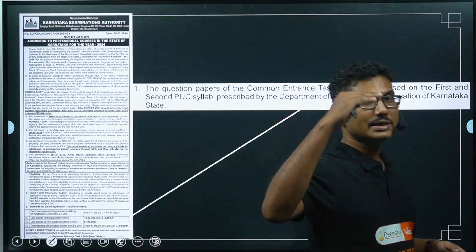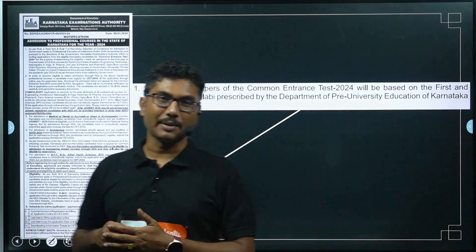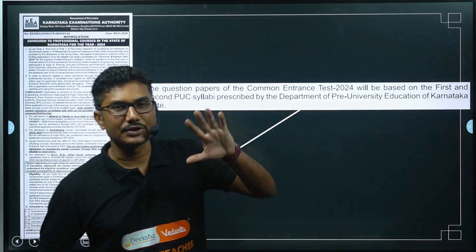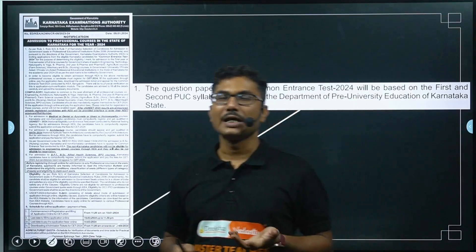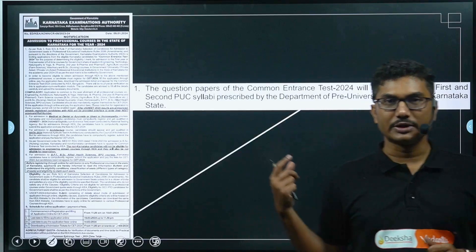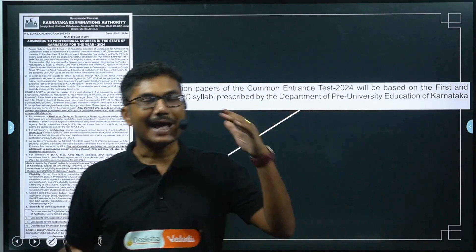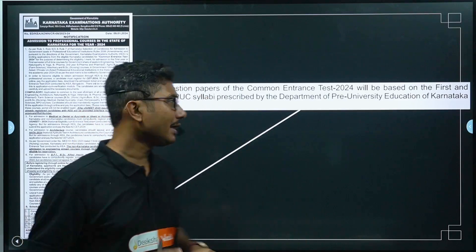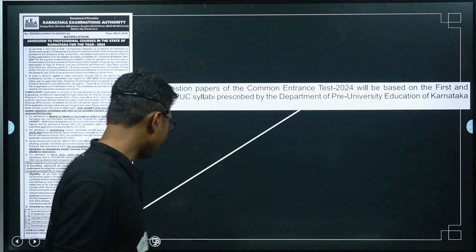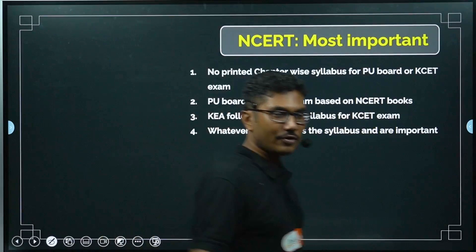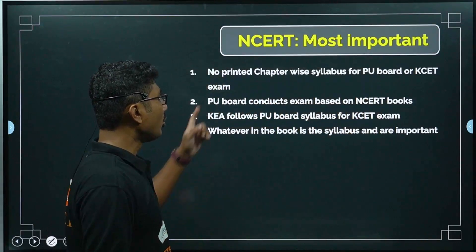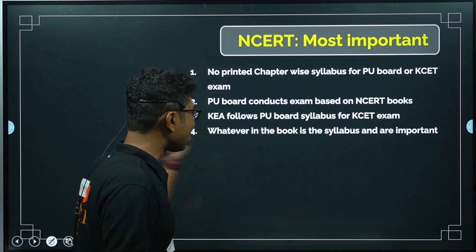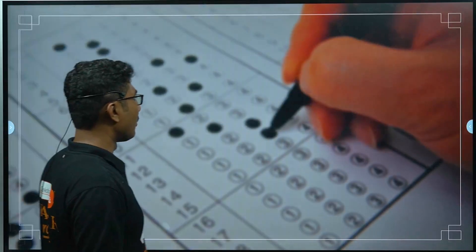There is no printed chapter-by-chapter syllabus for the PEA board. CBSE has a proper printed syllabus, and COMEDK also has a well-defined printed syllabus. JEE has a much bigger syllabus than the PU syllabus, and NEET also has a printed syllabus. But unfortunately, neither KEA nor the PEA board has a particular printed syllabus — they simply say whatever is in the NCERT is the syllabus. That is why NCERT is very, very important when studying for KCET 2025.